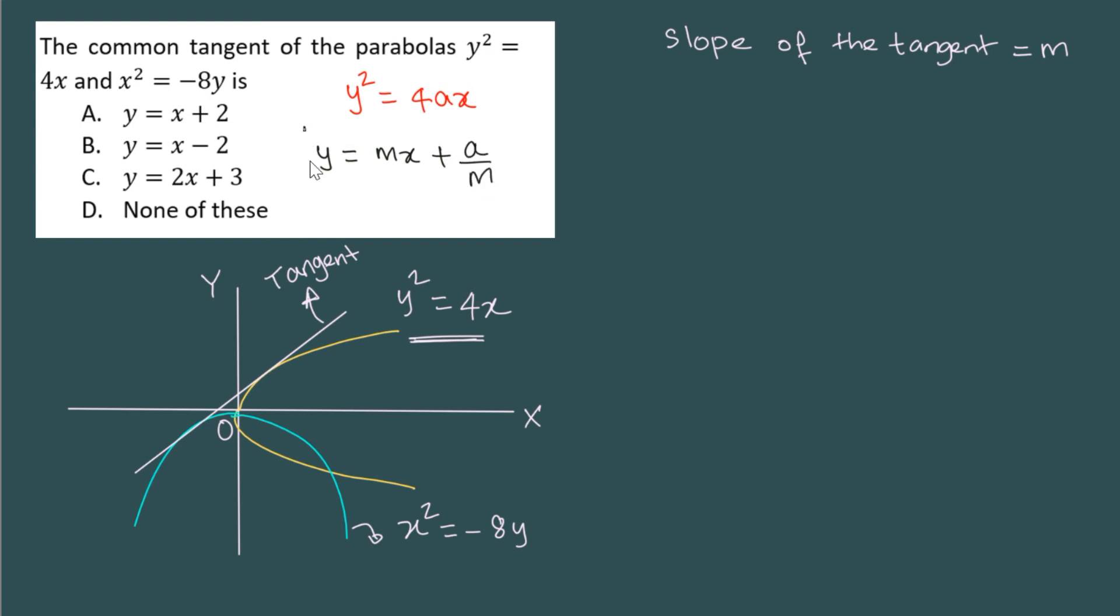So we can use this here. If I just take this parabola and then write down the equation of the tangent line, I get y is equal to mx plus a is 1 here. So 4 into 1 into x, a is 1, so I will simply get 1 by m. So that is the equation of the tangent.